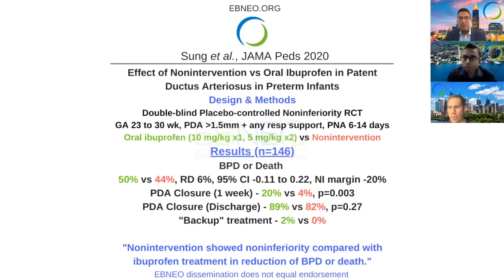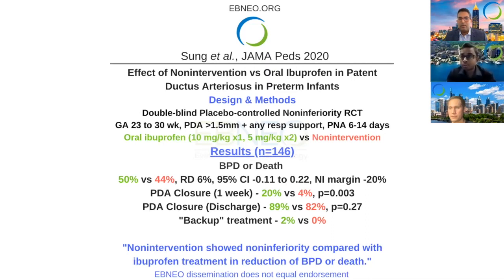Their primary outcome was death or BPD, and their margin for non-inferiority was no more than a 20% increase in death or BPD in the no-intervention group.